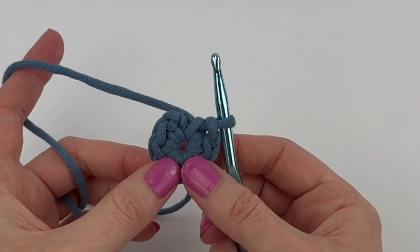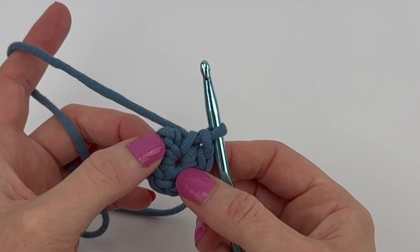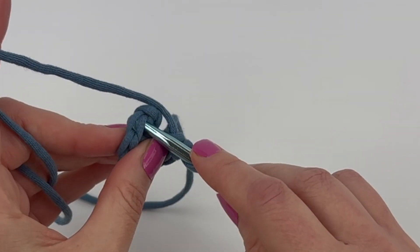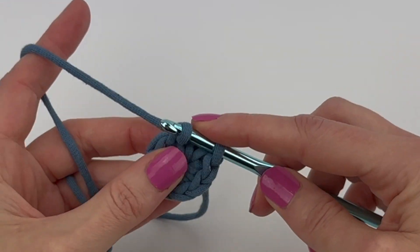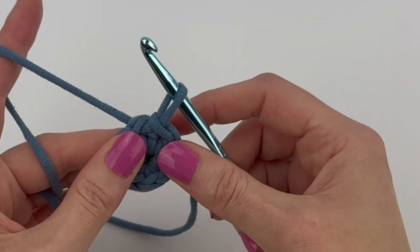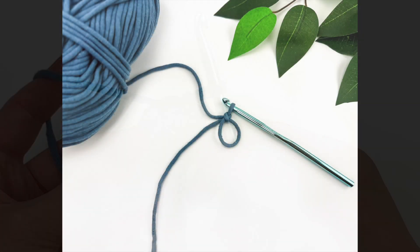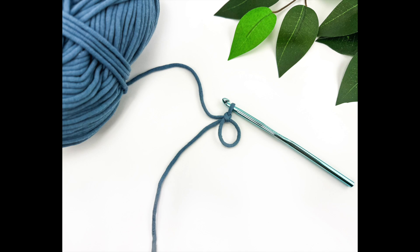If the pattern asks you to slip stitch into the first stitch made, you would work into the top of that first stitch to slip stitch to join. And that's how to make a magic circle.